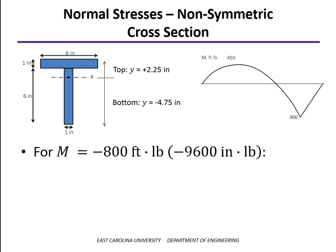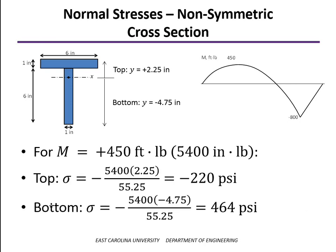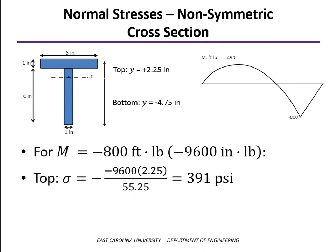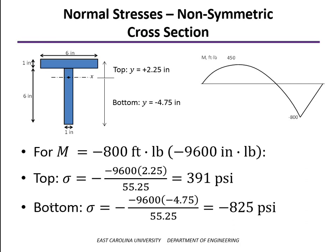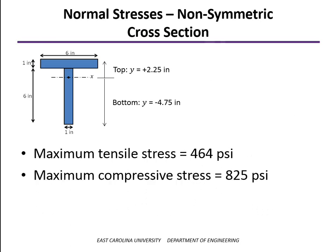At the point where the moment is negative 800 foot-pounds, the minus signs cancel at the top, giving a tensile stress of 391 psi. Notice that's lower than the tensile stress found at the lower magnitude moment. At the bottom, because the distance from the neutral axis is so much greater, the tensile stress at positive moment was 464 psi — and with three negative signs at the negative moment location, it comes out to a compressive stress of 825 psi. So our results: the maximum tensile stress is 464 psi and the maximum compressive stress is 825 psi, both occurring at the bottom of the beam but at different locations along its length.